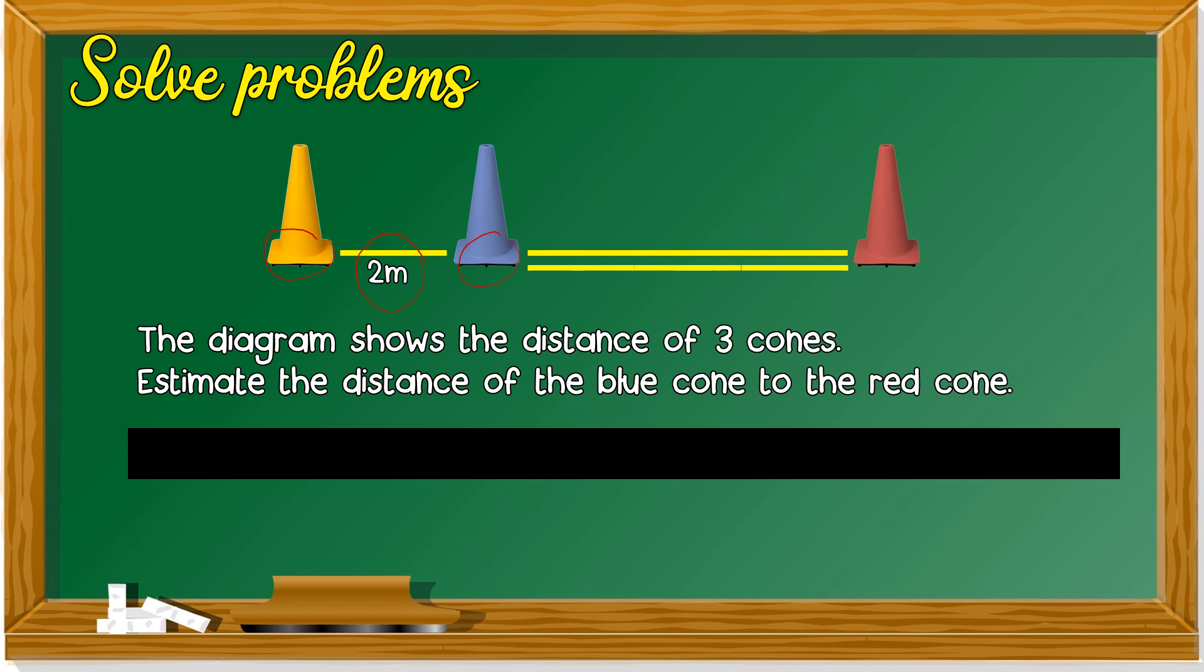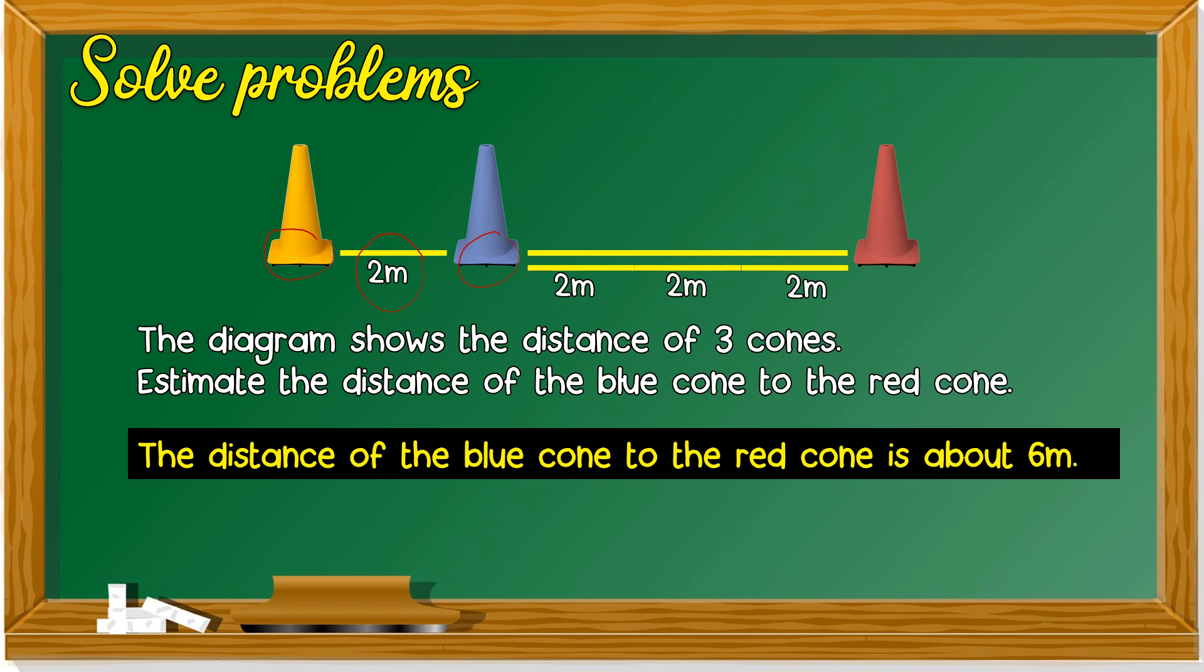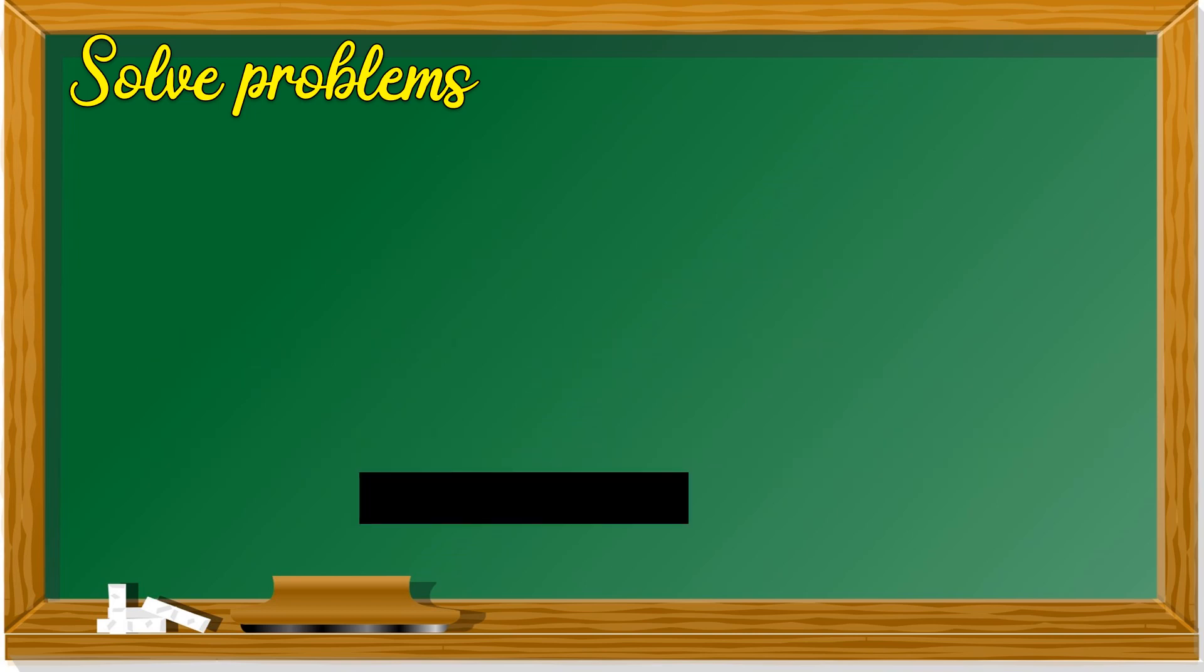So what is the distance of the blue cone to the red cone? We try to add this up. We get 6 m. The distance of the blue cone to the red cone is about 6 m.